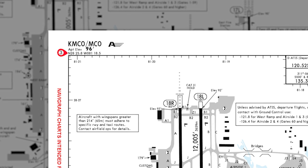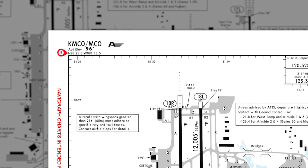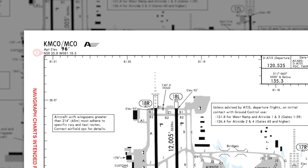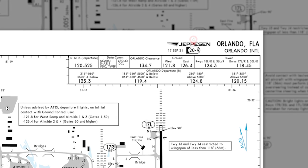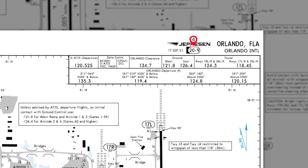Number three is the latitude and longitude of the airport. Number four is the index of the chart — in this particular case the 20-9 page.